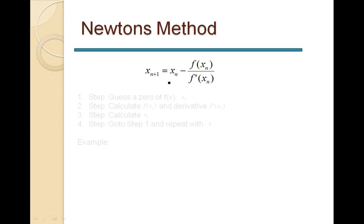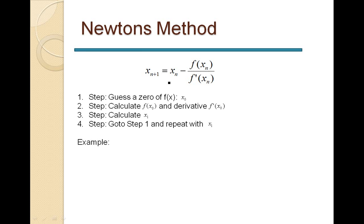To summarize the steps: start off with a good guess for your zero — it doesn't have to be very close, just an integer in the right region. Then evaluate the function value at that point, evaluate the derivative at that point, and calculate the next point x₁. Then go to x₁, repeat the same process to get x₂, and repeat over and over again.